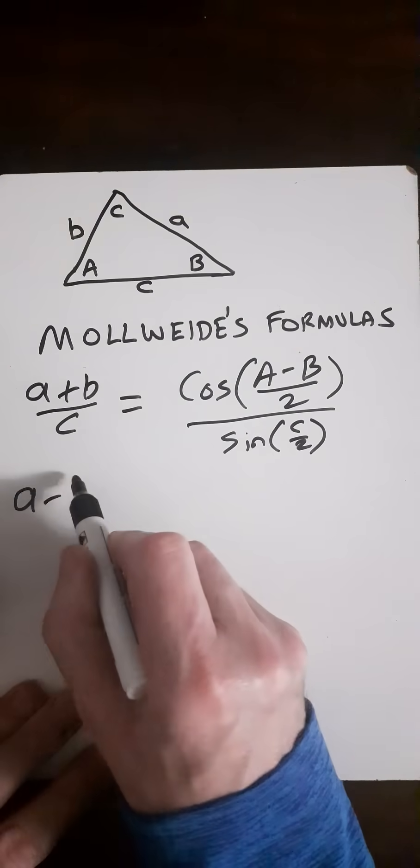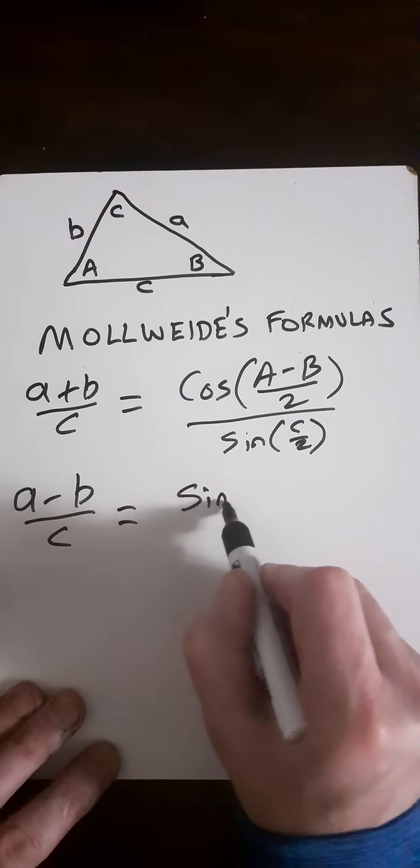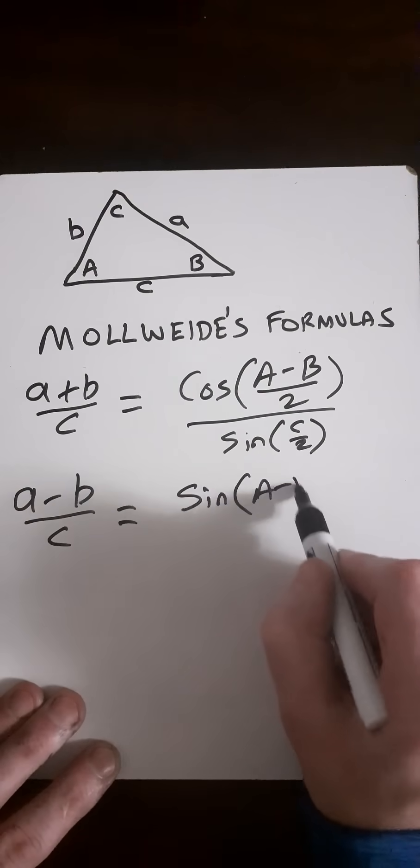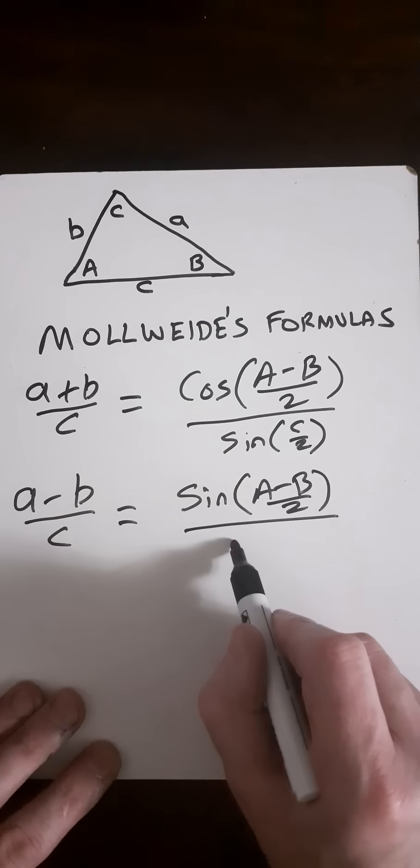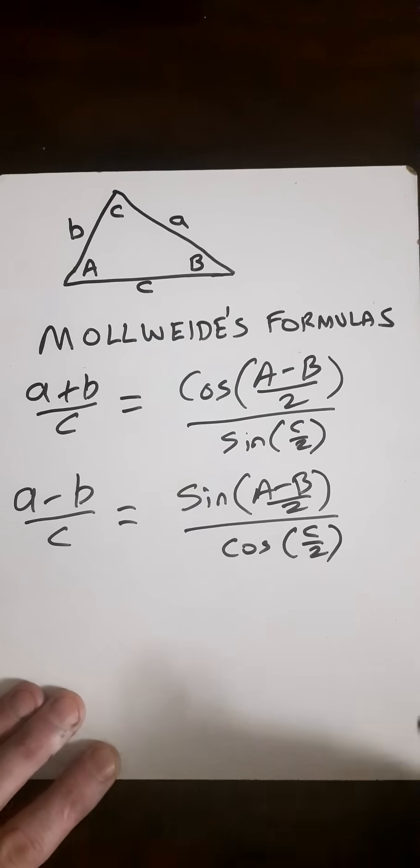And the other formula we can have is (a-b)/c is equal to sin((A-B)/2) divided by cos(C/2).